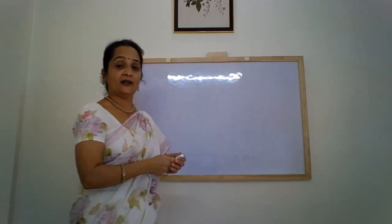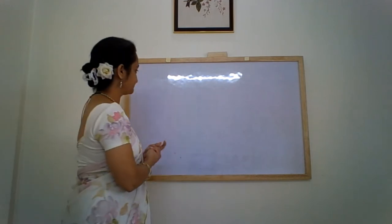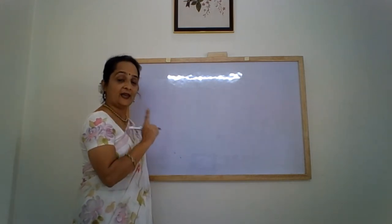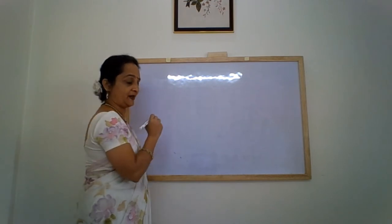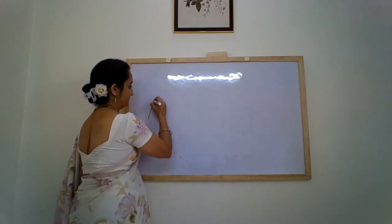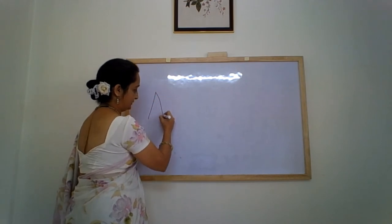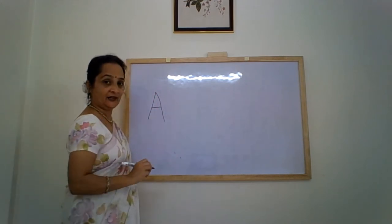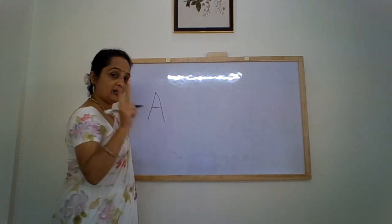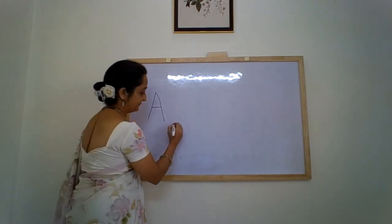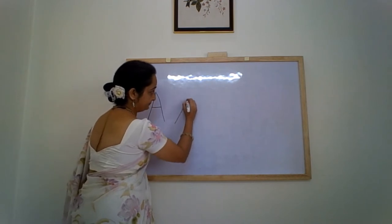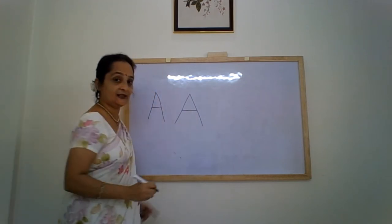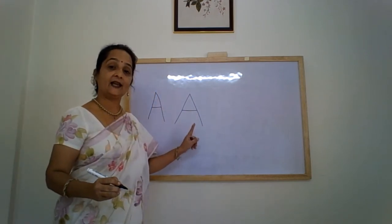Now let us revise writing these letters. Let's start with letter A. We write letter A with the help of the up-down pattern. We go up, we come down, and make a sleeping line in the middle. Let's see it one more time — we go up, we come down, and have a sleeping line in the center. This is letter A.